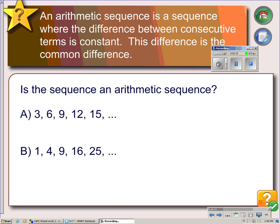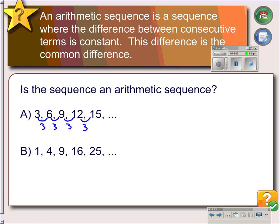We know that a sequence is an ordered list of numbers. There are many kinds of sequences; they're not all arithmetic. An arithmetic sequence is a sequence where the difference between consecutive terms is a constant, and that constant difference is called a common difference. So in example A here, the difference between these two terms is three, and the difference here is three, and three, and three. Since it's three every time, that means this one is arithmetic.